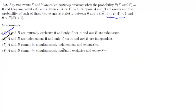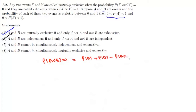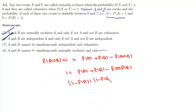Statement 7: A and B cannot be simultaneously independent and exhaustive. Suppose A and B are exhaustive, so P(A ∪ B) = 1. Writing P(A ∪ B) = P(A) + P(B) − P(A ∩ B), and if A and B are independent, then 1 = P(A) + P(B) − P(A) · P(B), which factorizes to (1 − P(A))(1 − P(B)) = 0. This means P(A) = 1 or P(B) = 1, contradicting the condition that both probabilities strictly lie between 0 and 1. So statement 7 is correct.